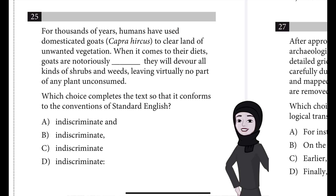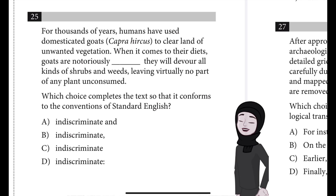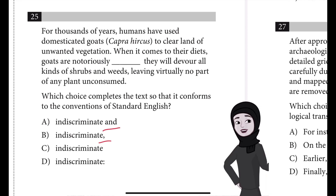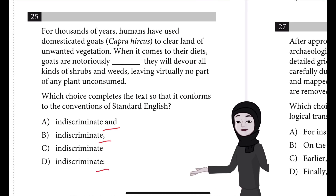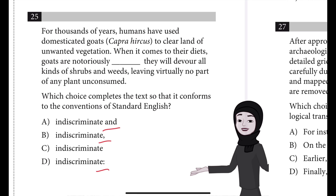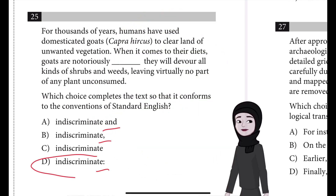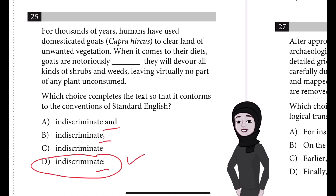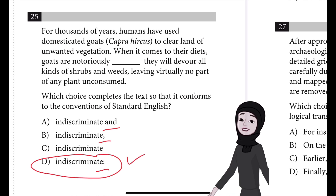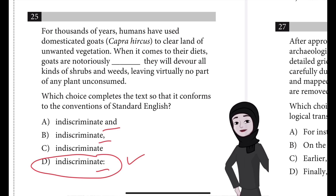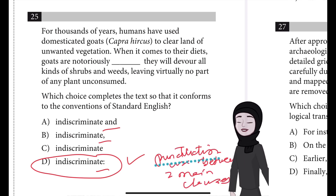Choice A has 'indiscriminate and', B has 'indiscriminate,' with a comma, C has just 'indiscriminate' with no punctuation, and D has 'indiscriminate' with a colon. If you said D, well done — that is the right answer. Choice D is the best answer. The convention being tested is punctuation used between two main clauses.